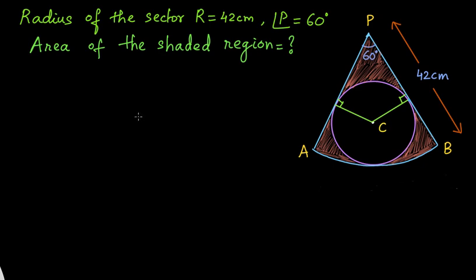Hello everyone. In this video we have another interesting geometry problem from Maths Olympiad exam. So here we have a circle that is inscribed inside a sector of a circle. So the radius of the sector is given as 42 cm. The angle of the sector is 60 degree.